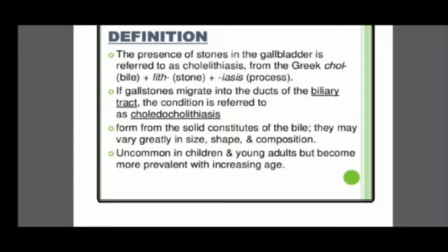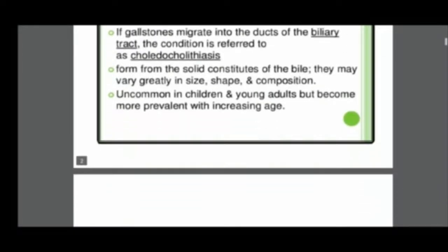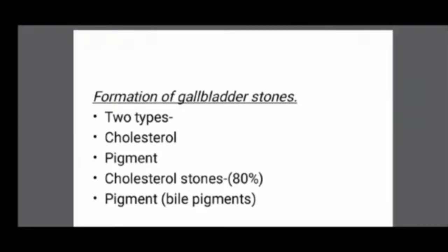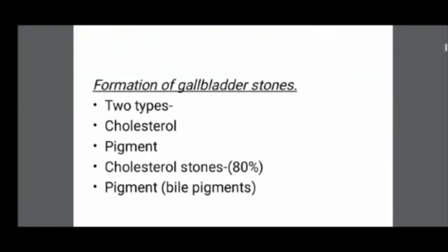Gallstones are uncommon in children and stone formation increases with increasing age. There are two types of gallbladder stones. The most common is cholesterol stones — around 80% of the stones formed are cholesterol stones. The rest are bile pigment stones.